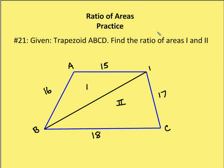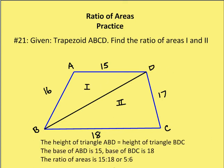Number 21: given trapezoid ABCD, find the ratio of areas one and two. This is a pretty straightforward problem. We see again in the trapezoid that the two triangles have the same height, even though they are oriented a little differently. The bases are different, so the relationship of the areas is just the relationship of the bases. The height of triangle ABD equals the height of triangle BDC. The base of ABD is 15 and the base of BDC is 18, so the ratio of the areas is 15 to 18, or five to six.